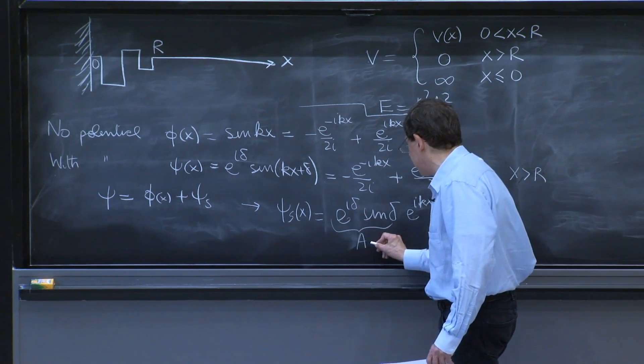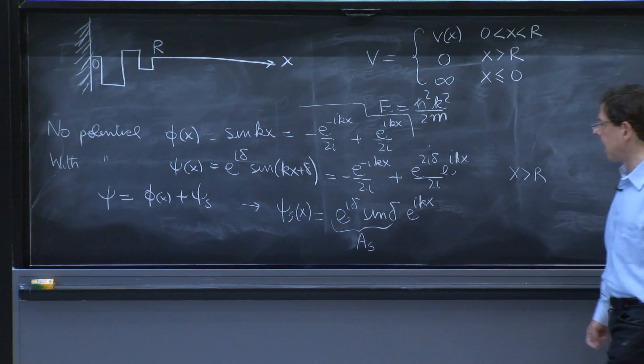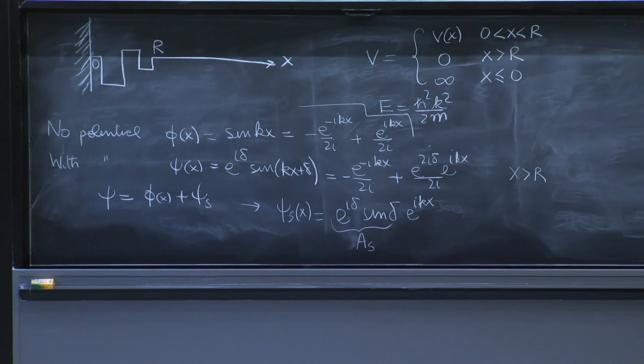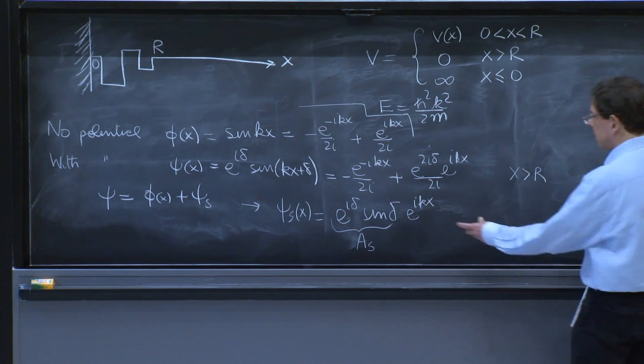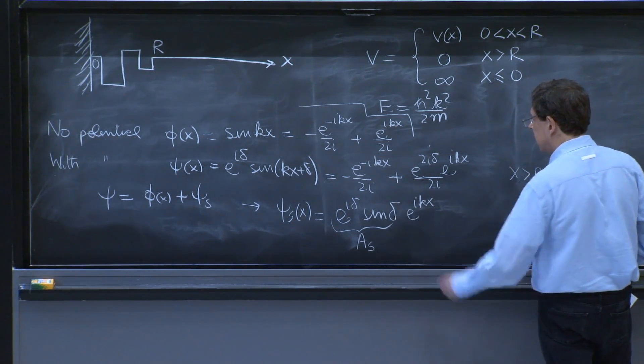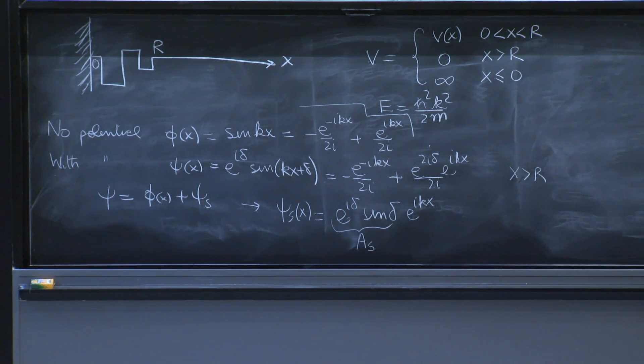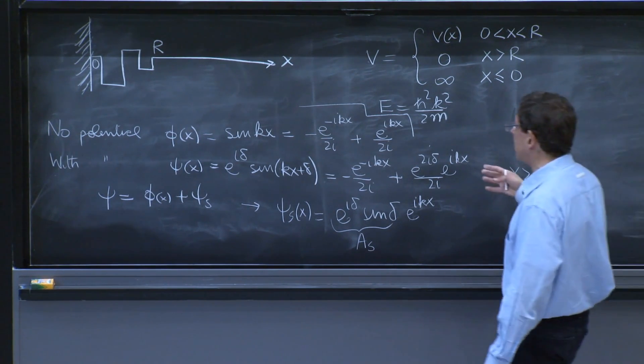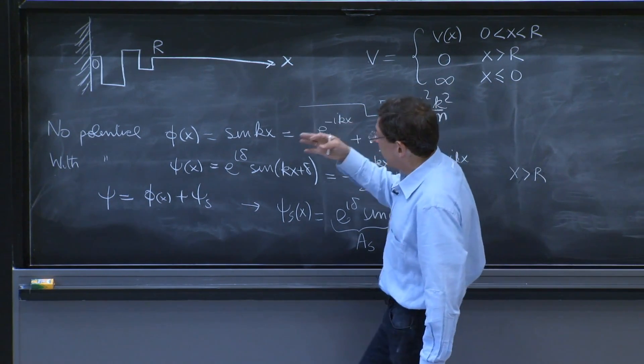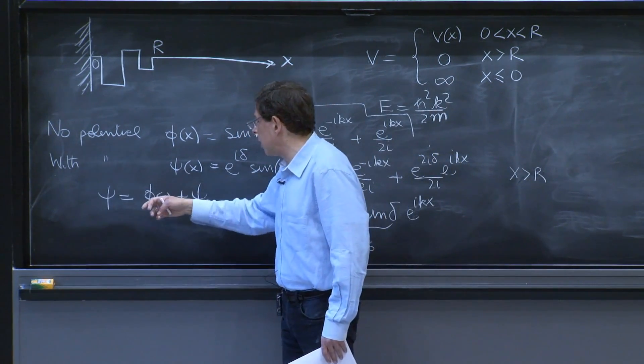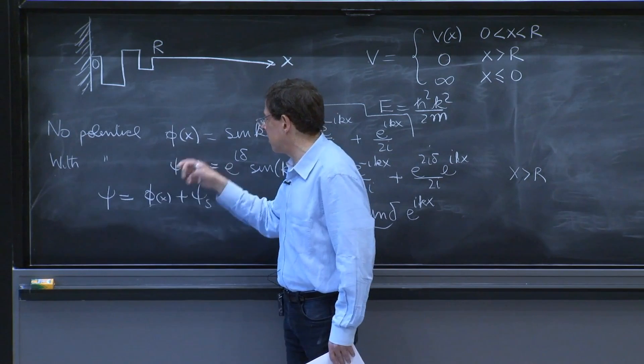And this coefficient is called the scattering amplitude, is the amplitude of the scattered wave. This is a wave that is going out, and this is its amplitude. So it has something to do with the strength of the scattering.